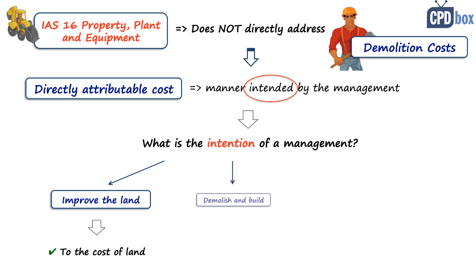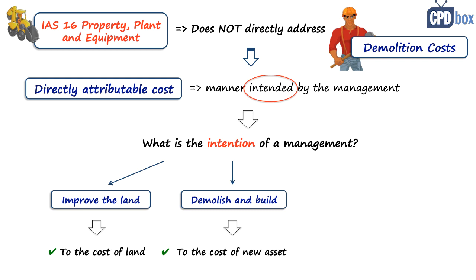Scenario two: the company acquired land with a building to demolish the building, develop the site, build a new building, and then use it. This is more complicated because the intention is to have the new building, and IAS 16, paragraph 58, says that the building and the land shall be classified as two separate items. In this case, demolition costs are incremental to the new building — you would not incur the demolition cost without wanting to build a new building — so you should capitalize the demolition cost to the cost of the new building.